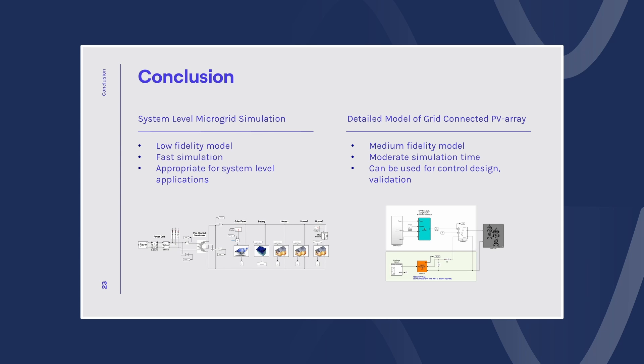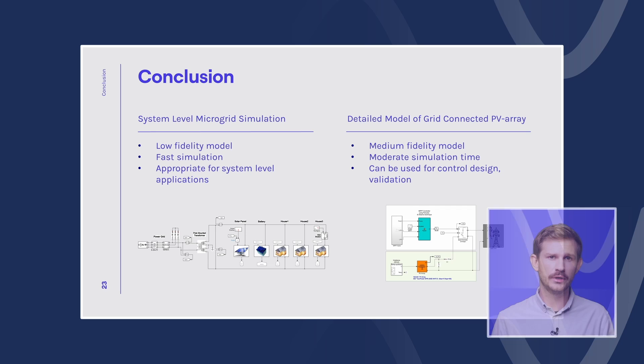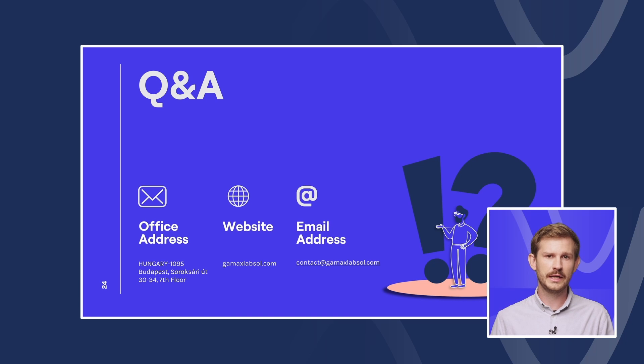To conclude this session on microgrid design and simulation, I would like to highlight that we showed two models for you today. First, the system level model of a small scale microgrid, which was a low fidelity model, but comes with really fast simulation times, and is appropriate for system level model applications. And then we continued with a detailed model of a grid connected PV array, which was a medium fidelity model. It comes with moderate simulation times, but can be used for control design and component validation. With this, I would like to encourage you to start using MATLAB and Simulink for your microgrid applications. I would like to thank you for your attention and joining this session. I hope you find something useful, and I would like to open up the Q&A session.